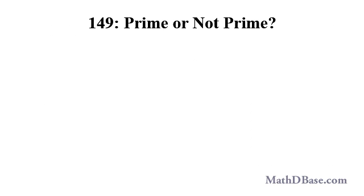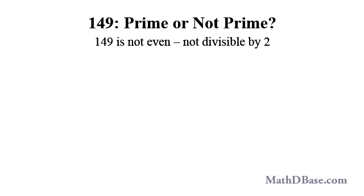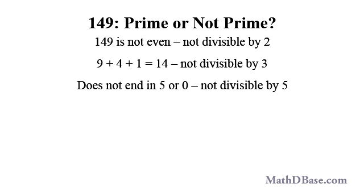Unless a whole number is very small, say under 144, it is generally not immediately obvious just by looking at it and without the divisibility rules what that number might be divisible by. If we want to determine if 149 is a prime or composite number, we can apply the divisibility rules that were discussed in Part 1, Multiples and Divisibility. 149 is not divisible by 2, 3, or 5 because it is not even, the sum of the digits is 14 which is not divisible by 3, and it does not end in 5 or 0, respectively.